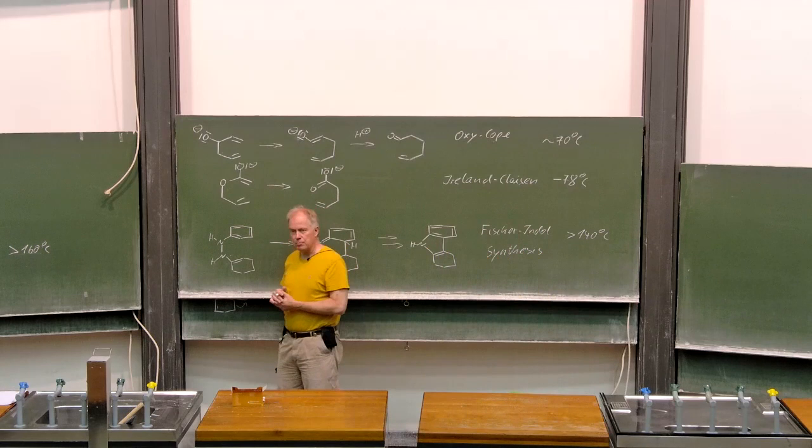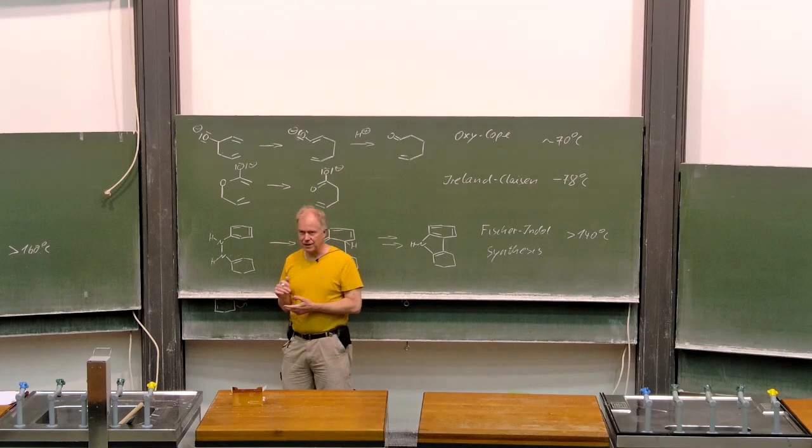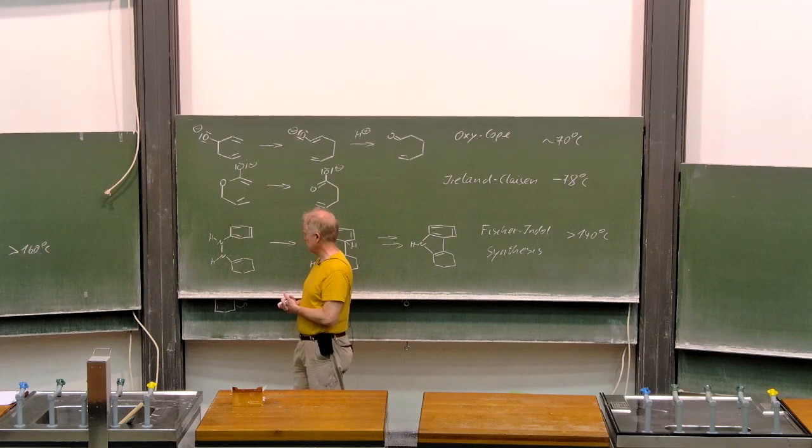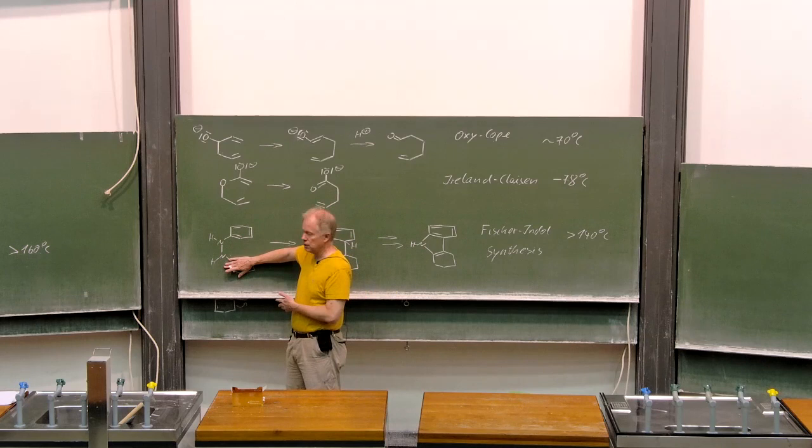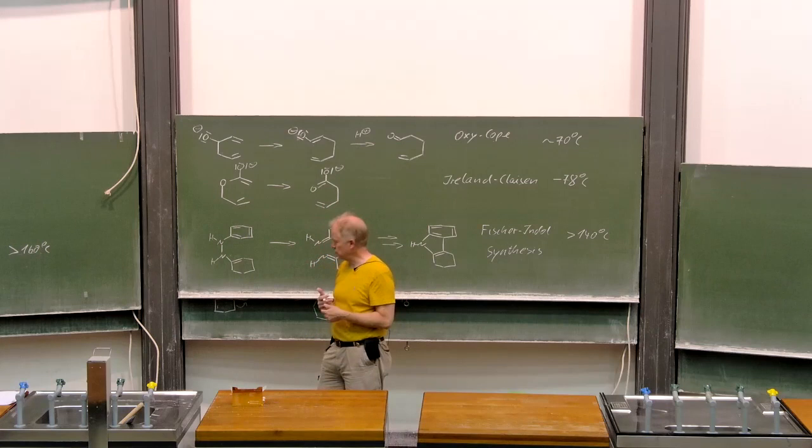As a final example of 3-3 sigmatropic shifts we have this strange system here. Actually, you could call that an aromatic annelated diazacope rearrangement. So, how do you synthesize such a molecule? Very easy. You just take phenylhydrazine and make a condensation reaction with cyclohexanone, having first the imine and the imine-enamine tautomeri will give us this structure.